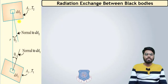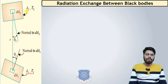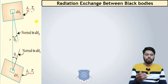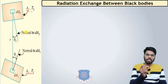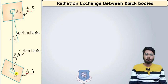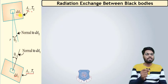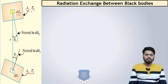Suppose we have two bodies as shown in the figure. The area of the first plate is A1, maintained at temperature T1. The area of the second plate is A2 at temperature T2. To derive the relation for heat transfer by radiation between these two plates, we consider differential areas of both plates: dA1 from plate A1, and dA2 from plate A2. The distance connecting the centers of dA1 and dA2 is r, as shown in the figure.